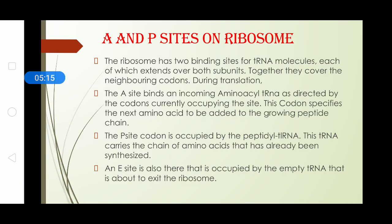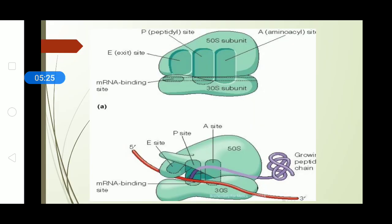Now in ribosome, there are two sites, that is the A site and the P sites. Now, let's see what A and P sites are. Well, if you see in this diagram, the RNA has three sites as mentioned over here. A, P and E, you can see in the above picture part A, it is mentioned that A for amino acid site, P for the peptidyl site, E for the exit site.